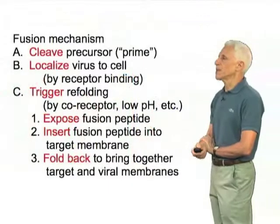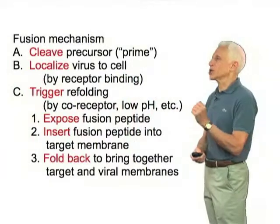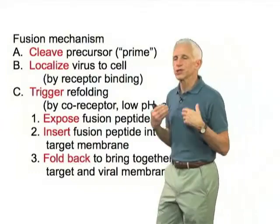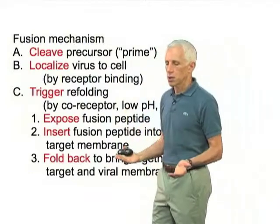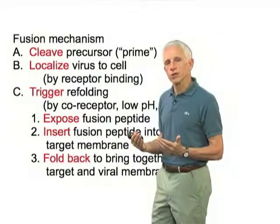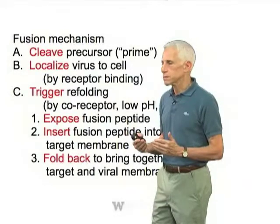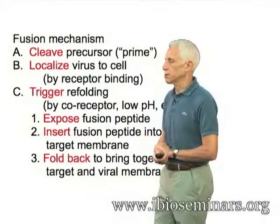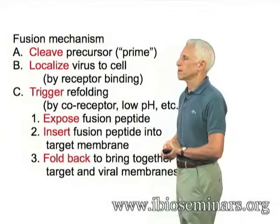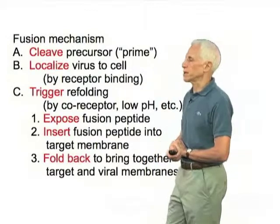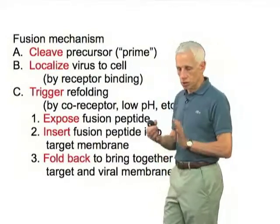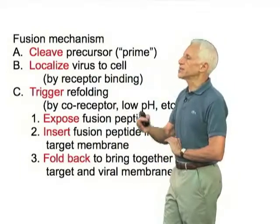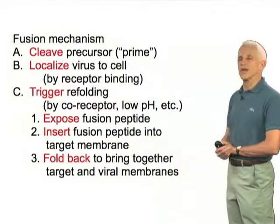The fusion mechanism can be thought of as cleaving the precursor, or priming, this fusion machinery, localizing the virus to the cell by receptor binding, ultimately by uptake into the endosome, and the triggering of refolding — in the case of flu by low pH, in the case of other viruses by a receptor or co-receptor binding — that leads to this stereotypical sequence of events.